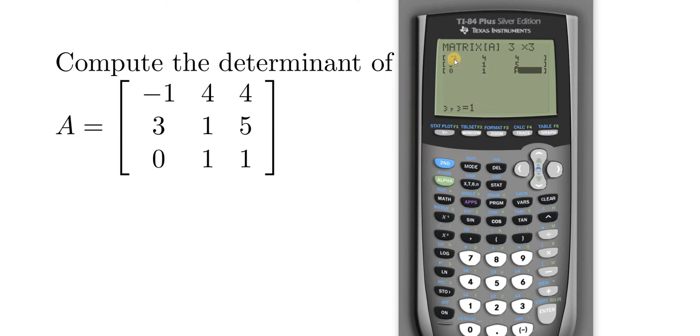So we've entered all of the data. Let's just double check. So negative one, four, four, three, one, five, zero, one, one. Okay, so now to exit this menu, because we do have to exit it, we have to hit quit. So hit second and then mode.